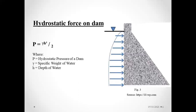The next force is the hydrostatic force on the dam. The pressure distribution of the hydrostatic force by water is a linear distribution. P, the hydrostatic force, equals gamma h squared divided by 2, where gamma is the specific weight of water and h is the depth of water. P is the hydrostatic force on the upstream side of the dam.